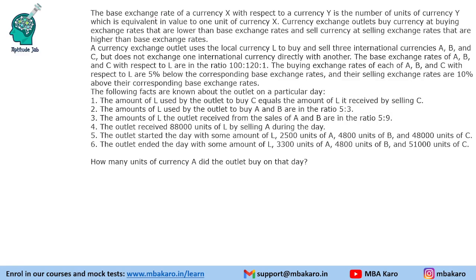The base exchange rate of currency X with respect to currency Y is the number of units of Y which is equivalent in value to one unit of currency X. So if the base exchange rate of currency X is 40, that means X equals 40 Y — we need 40 units of Y to purchase one unit of currency X. That is called the base exchange rate.